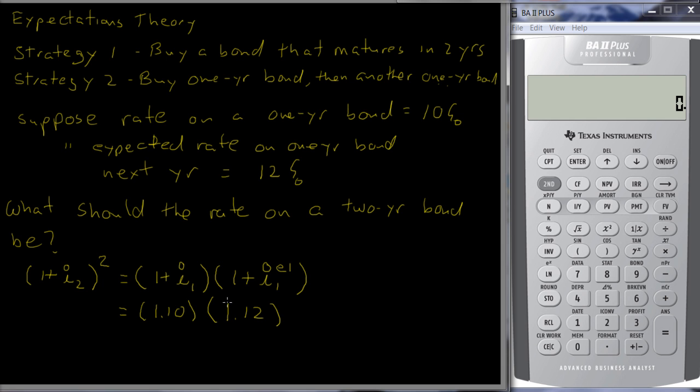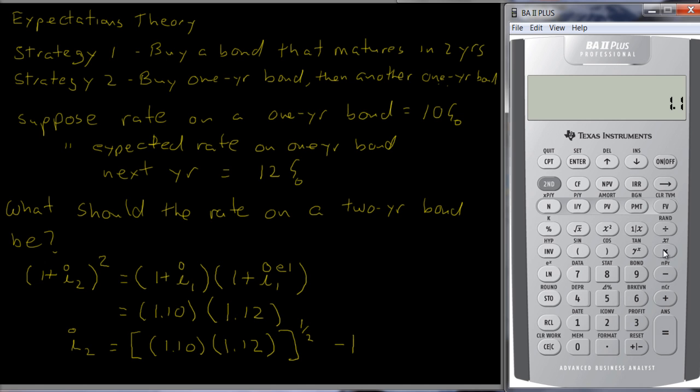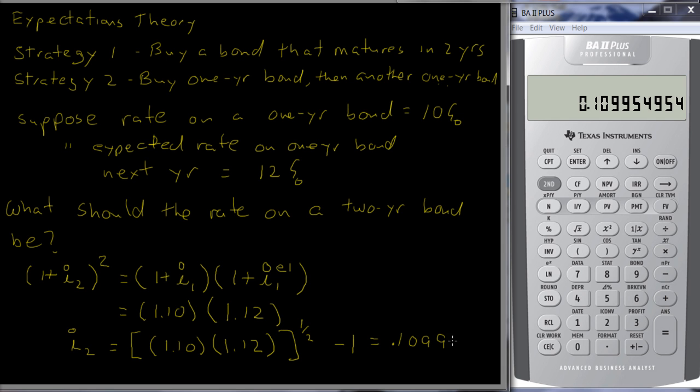If we want to solve for I2, we're going to have to take the square root of this and then subtract 1 from both sides. So I2 is going to be equal to, in fact, I'll just generalize this, 1.10 times 1.12. If we want to get rid of that square root, we're going to have to raise it to the one-half power and then subtract 1. Let's see what we get. We're going to get 1.1 times 1.12, okay, take the square root of that and then subtract 1 from it, and we get 0.10995,